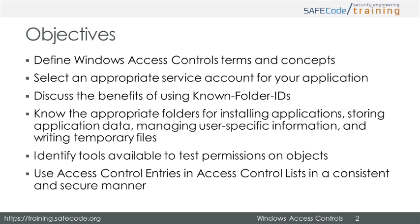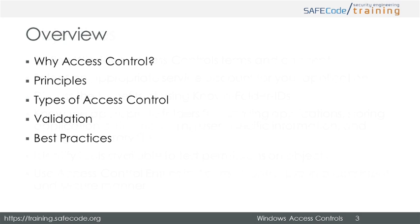This course is designed as an introduction to basic concepts in Windows Access Controls. We will discuss the reason for using Windows Access Controls, the characteristics of security principles and how access controls affect them, types of access controls, terms and concepts, as well as aspects of mandatory and discretionary access control in the Windows operating system. We'll also discuss testing strategies to validate that proper access controls are in place and best practices for making sure an application's use of access controls is secure.